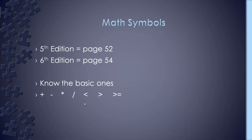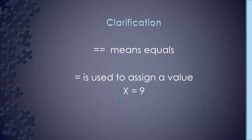This chapter also covers math symbols — page 52 in the fifth edition, page 54 in the sixth. Make sure you know the basic ones: add, subtract, multiply is the asterisk, and divide is the forward slash. Also less than, greater than, greater than or equal to, and less than or equal to. When you see a double equal sign, that means equality comparison. The single equal sign is just used to assign a value. So for a boolean statement like 'as long as x equals 9,' you have to write 'x double-equals 9.'